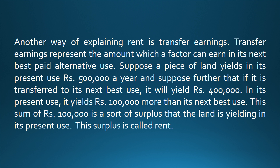Another way of explaining rent is transfer earnings. Transfer earnings represent the amount which a factor can earn in its next best paid alternative use. Suppose a piece of land yields in its present use ₹500,000 a year, and suppose further that if it is transferred to its next best use, it will yield ₹400,000. In its present use, it yields ₹100,000 more than its next best use. This sum of ₹100,000 is a sort of surplus that the land is yielding in its present use. This surplus is called rent.